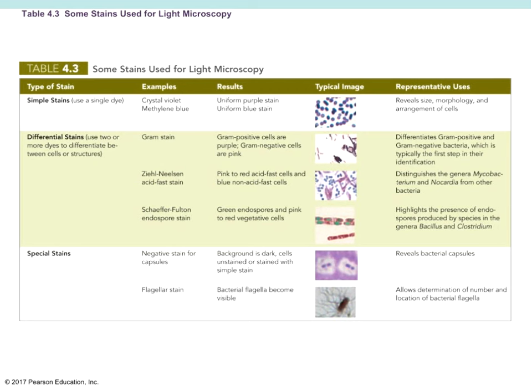Here are those different stains we looked at: simple stains, differential stains in three different types — endospore staining and acid-fast staining, where acid-fast cells are red and non-acid-fast cells are blue (used for mycobacterium, nocardia, and other bacteria) — and special stains. As with every table I put in your notes, this is good to make a notecard from or memorize, as it gives you an at-a-glance comparison of these different stain types, what they're used for, and what the results look like.